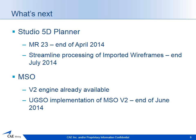We've begun a process of streamlining the processing of activities. In MR23, fixed cross sections, outlines and drives activities will now process with much fewer button clicks — we've removed cases where 5D Planner essentially just asked you to click OK to confirm. In the following version slated for end of July, we'll have done the same streamlining for imported wireframes and complex solids. As for MSO, we currently implement the version 1 engine in 5D Planner and Studio 3. There already is a V2 engine available and our implementation of that, which we call UGSO, should be available at the end of June. We're just tweaking the UI to make it more intuitive and graphical to lead you through the process.